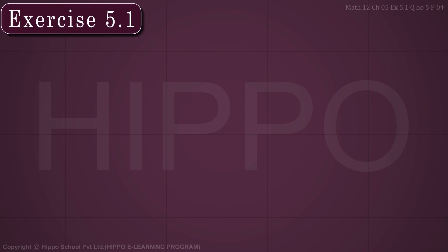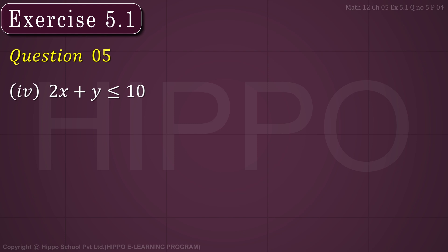Exercise number 5.1, question number 5, part 4. The system of inequalities is: 2x plus y less than or equal to 10, x plus y less than or equal to 7, and minus 2x plus y less than or equal to 4.